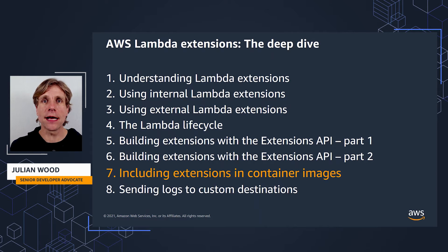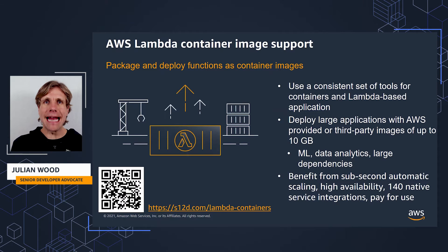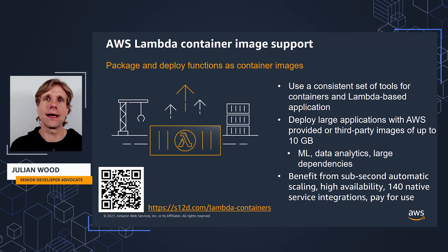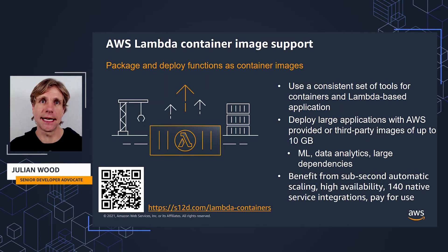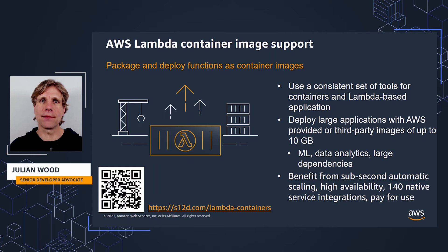In this video I'm going to be taking a look at how you can include your extensions in functions packaged as container images, which don't use Lambda layers. Lambda container image support allows you to build and package your functions as container images from a Dockerfile, so you can take advantage of the rich container tooling ecosystem including the Docker CLI. You still get the operational benefits of Lambda with a larger deployment package size of up to 10 gig, compared to zip archive functions which are a maximum of 250 meg.